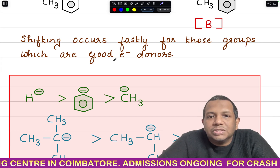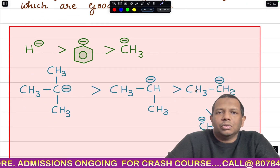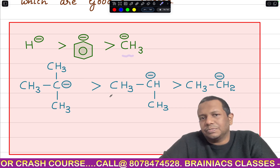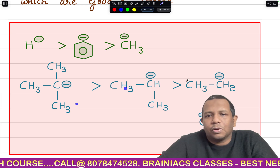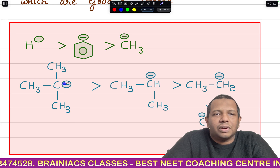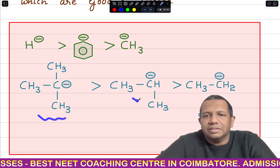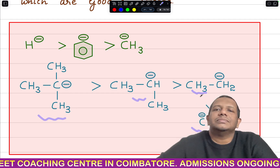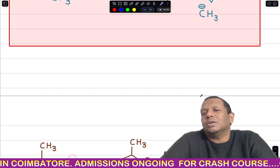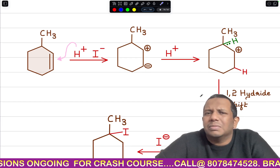Shifting occurs for groups that are good electron donors, which are also good nucleophiles. H⁻ is the strongest nucleophile, then phenyl carbanion, then CH₃⁻. Comparing these groups: three CH₃ groups connected together give very high electron density due to the +I effect, making it the best electron donor. This is the basis on which shifting order is determined.